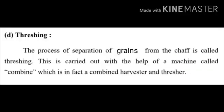D. Threshing: The process of separation of the grains from the chaff is called threshing. This is carried out with the help of a machine called a combine, which is in fact a combined harvester and thresher.